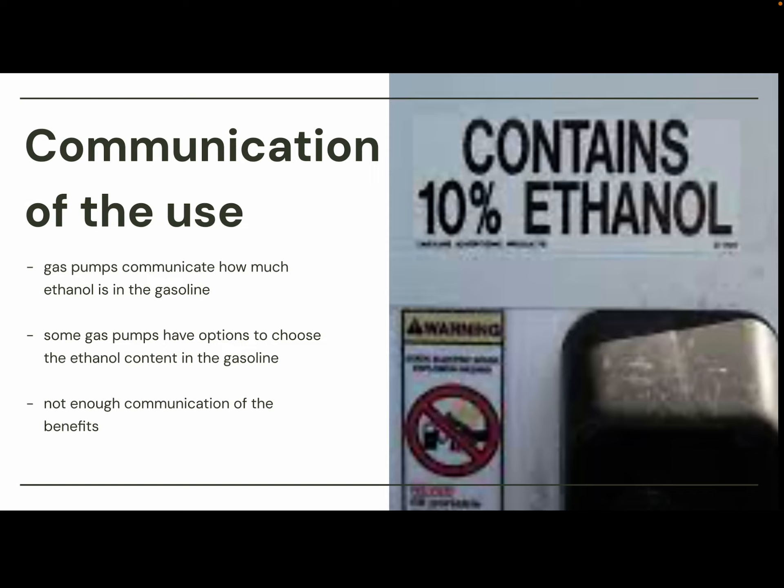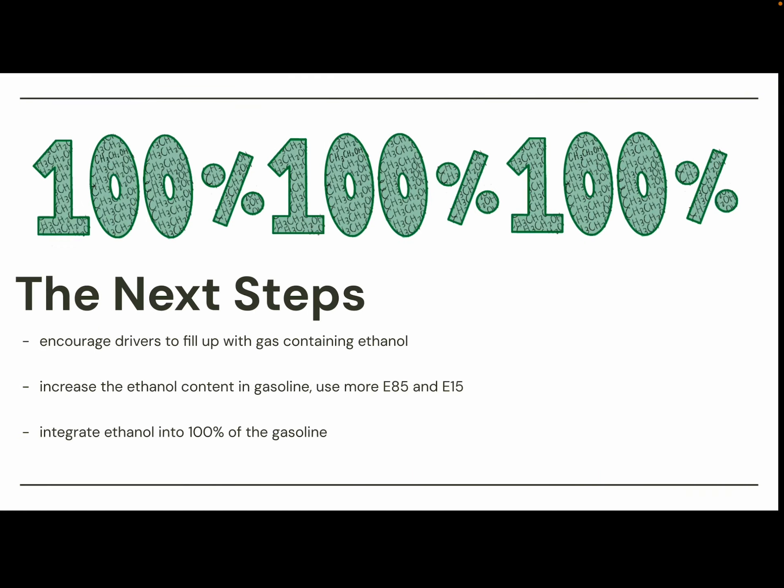Regarding communication of ethanol use — it's not communicated a lot. Most gas pumps do show the ethanol concentration, for example labeling that it contains 10% ethanol, and some gas pumps have options to choose the ethanol content. However, there's not enough communication of the benefits ethanol provides — most people don't know it's better for the environment, and that should be better communicated.